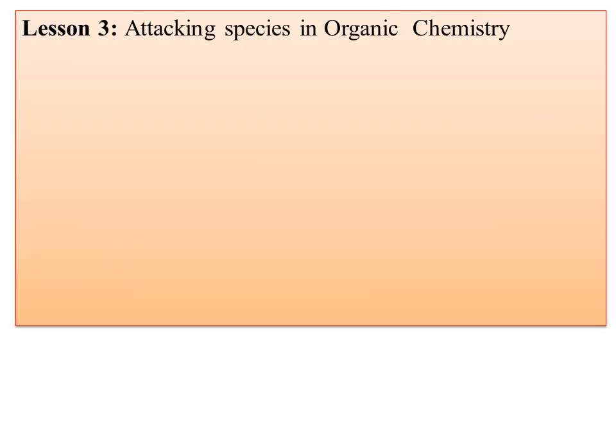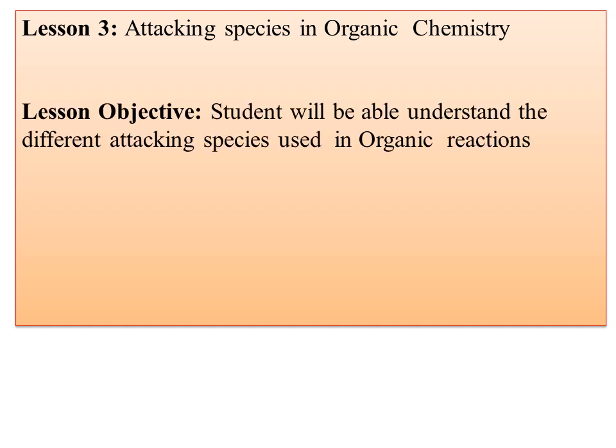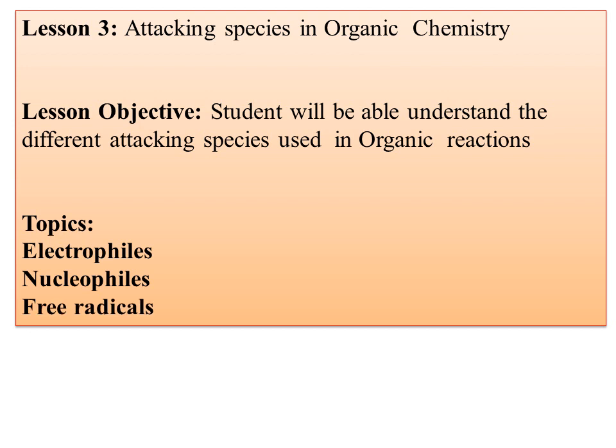The third lesson covers attacking species in organic chemistry. Once the student knows what the different attacking species are, it will be very easy to understand the mechanism. Mechanism is the basis for all reactions in organic chemistry. There are different types of attacking species: electrophiles and nucleophiles. Electrophiles can be positively charged or neutral. Nucleophiles are negatively charged or neutral. Similarly, free radicals are also attacking species encountered in organic reactions, and these will be studied in detail in lesson number three.